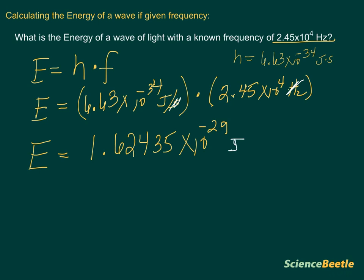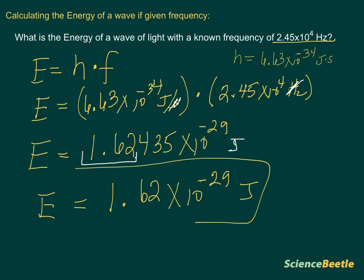But notice again, the numbers have more significant figures than we actually need. We only have to consider the first three. So our final answer then is going to be equal to 1.62 times 10 to the negative 29. And again, the answer here is in joules. So here's your answer to this problem.